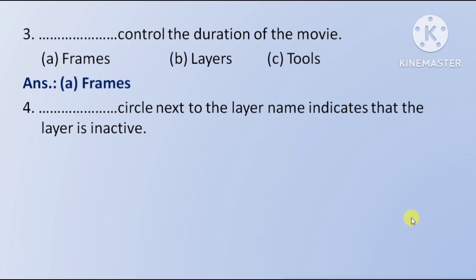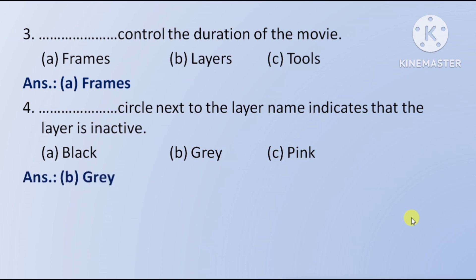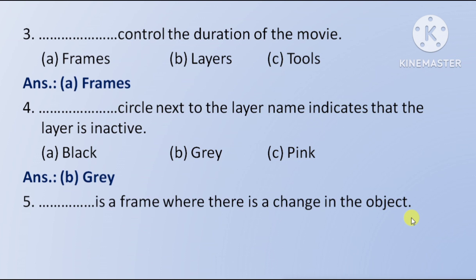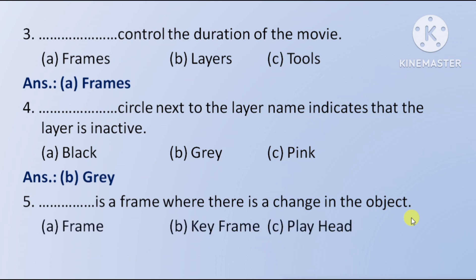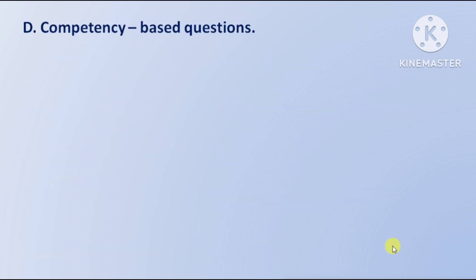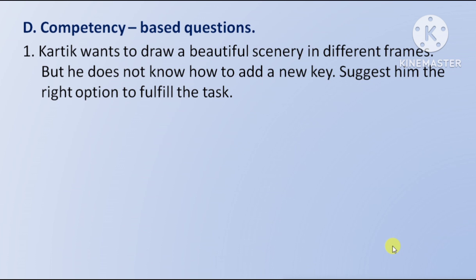Next question: a circle next to the layer name indicates that the layer is inactive — Option A: Black, Option B: Gray, Option C: Pink. The right answer is Option B — Gray. Next question: a frame where there is a change in the object is called — Option A: Frame, Option B: Keyframe, Option C: Playhead. The right answer is Option B — Keyframe.